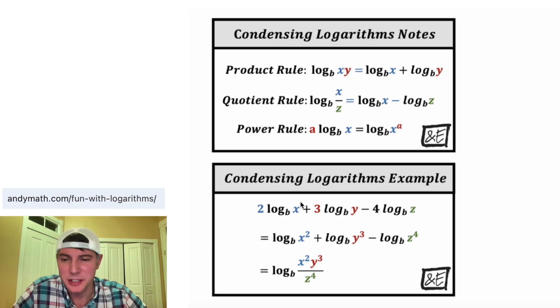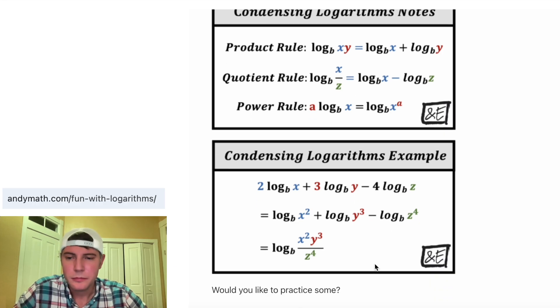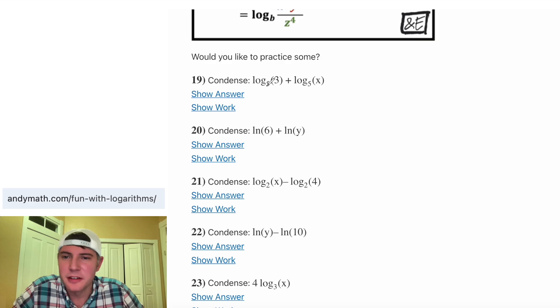First, we can bring up the exponent. So this 2 makes this an x squared. This 3 makes this a y cubed. And this 4 makes this a z to the 4th. And then for the last step, these three logs can become a single logarithm where these two that are added are on top being multiplied. And this one being subtracted is on bottom being divided.